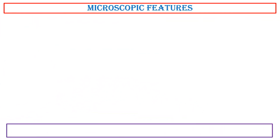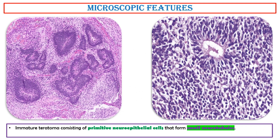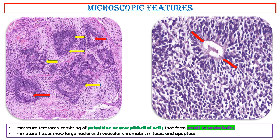Microscopic features. These two photos show immature teratoma consisting of primitive neuroepithelial cells that form small neurotubules. Immature tissues show large nuclei with vesicular chromatin, mitosis, and apoptosis.